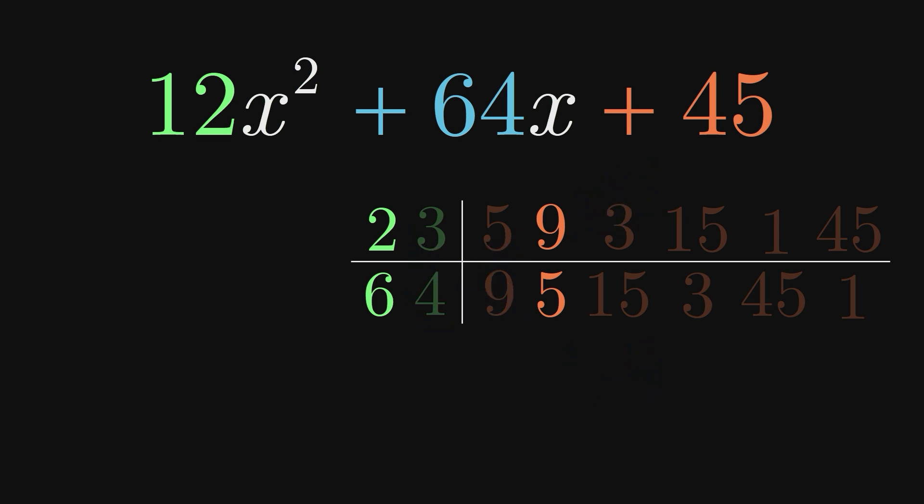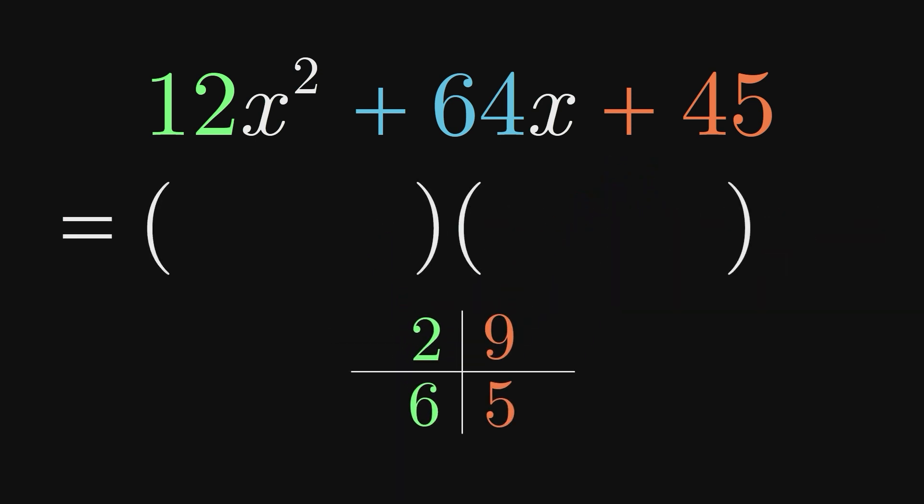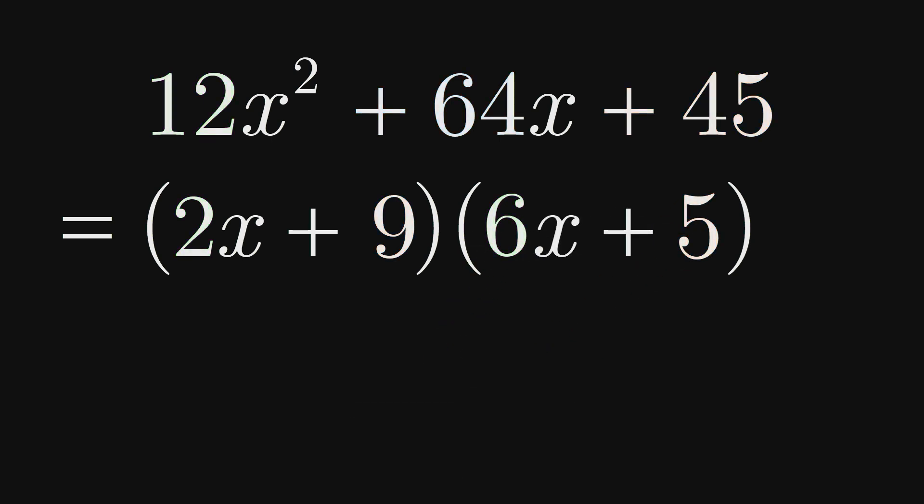Now that we've found the right combination of numbers, we can write our factors. One factor is 2x plus 9. The other is 6x plus 5. And our trinomial is now fully factored.